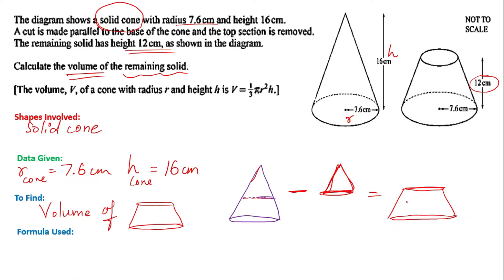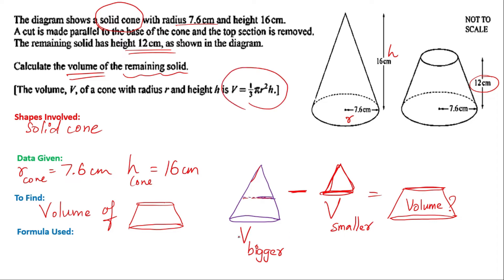So your task is to find the volume of this frustum. You calculate the volume of the bigger cone and subtract the volume of the smaller cone. This is the simple approach. You have the volume formula for a cone, so let's check if you have the radius and height for each of these cones.